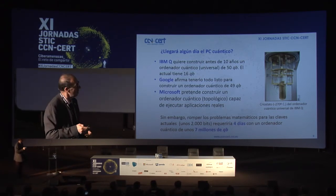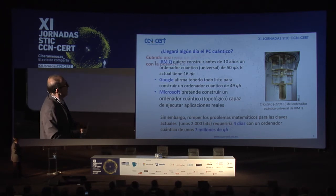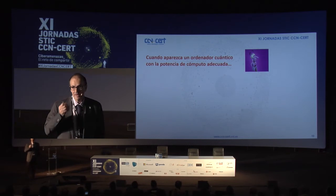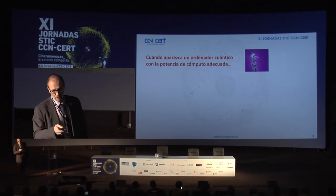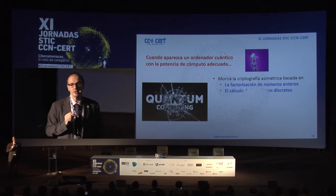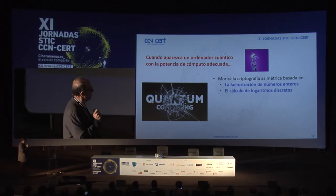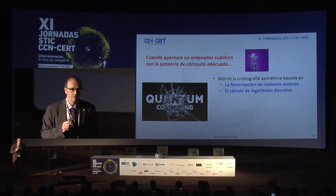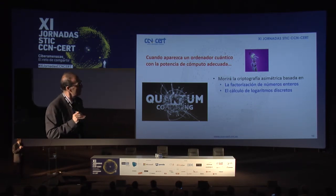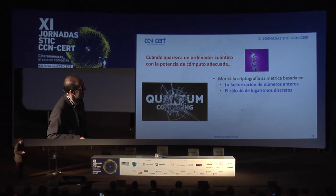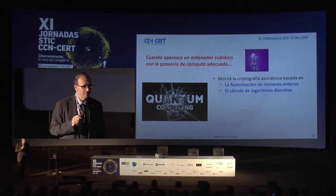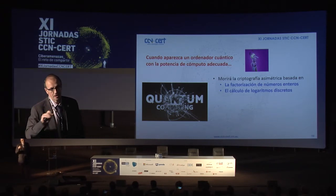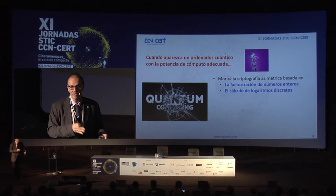Para que nos hagamos una idea de por dónde van los tiros: si en algún momento tuviéramos un ordenador cuántico con capacidad suficiente para romper los problemas matemáticos, la criptografía asimétrica tal y como la conocemos habrá muerto. No podremos utilizar ningún sistema de cifrado basado en factorización de números o en el logaritmo discreto. Dicho de otra manera: ni curvas elípticas, ni Diffie-Hellman, ni RSA, ni nada que dependa de cualquiera de esos.